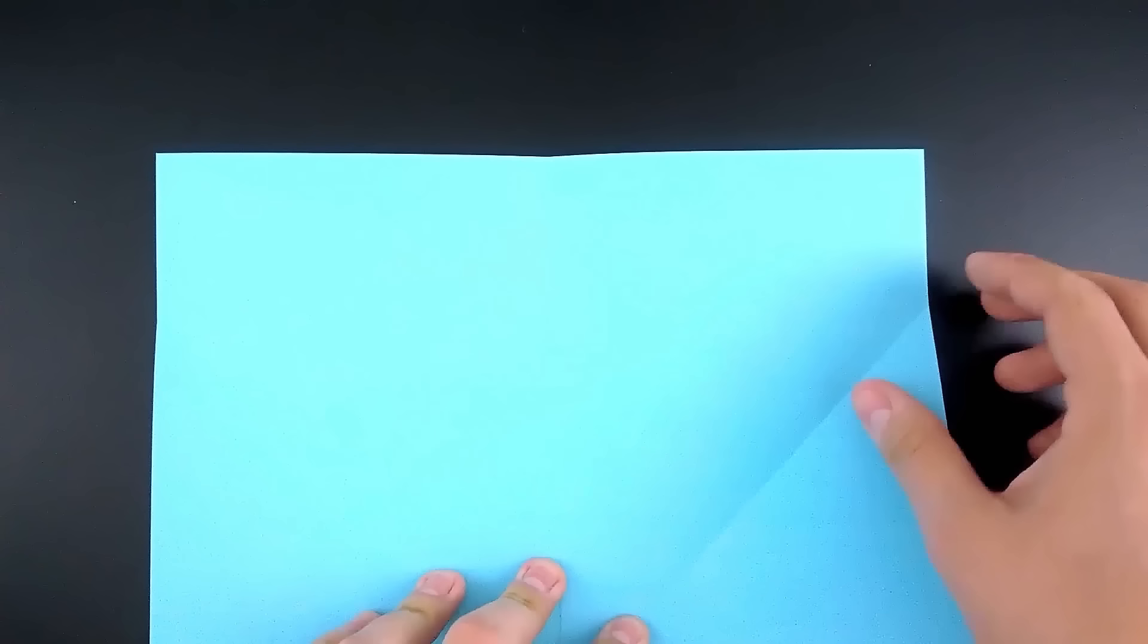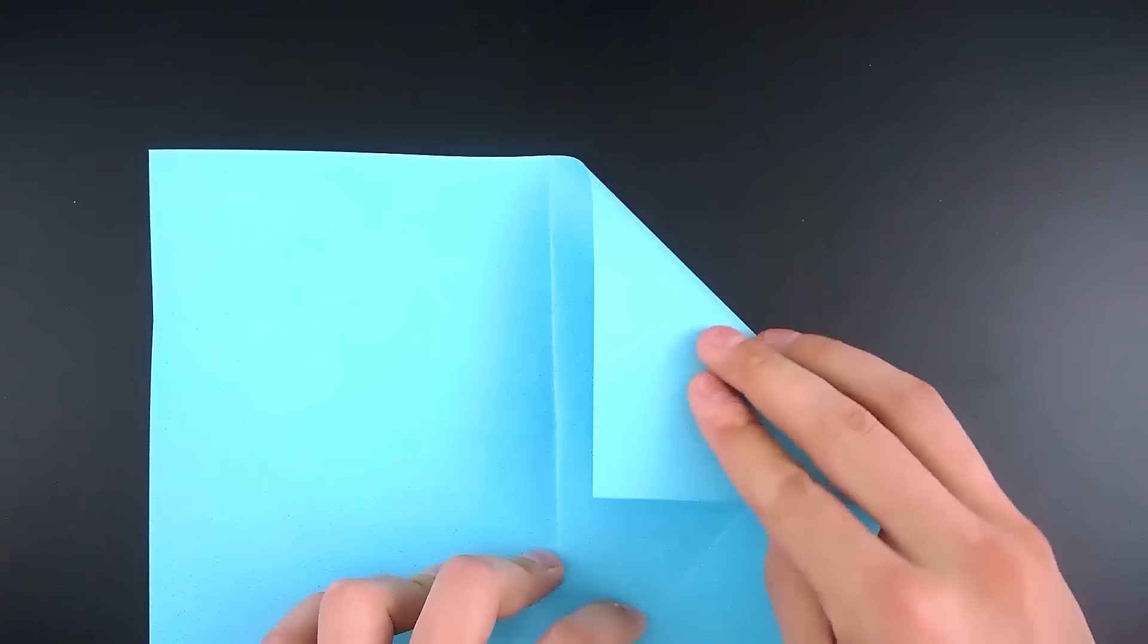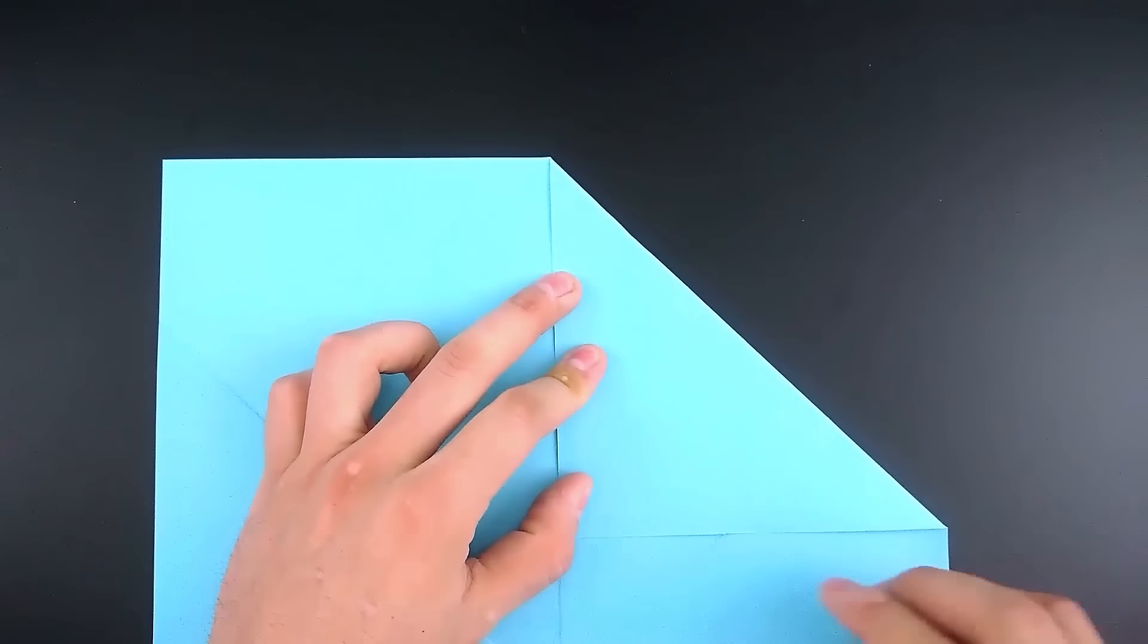Undo both, and repeat the same step with the top. Just bring this half to the middle and then repeat with the other. This time we need to keep folded.